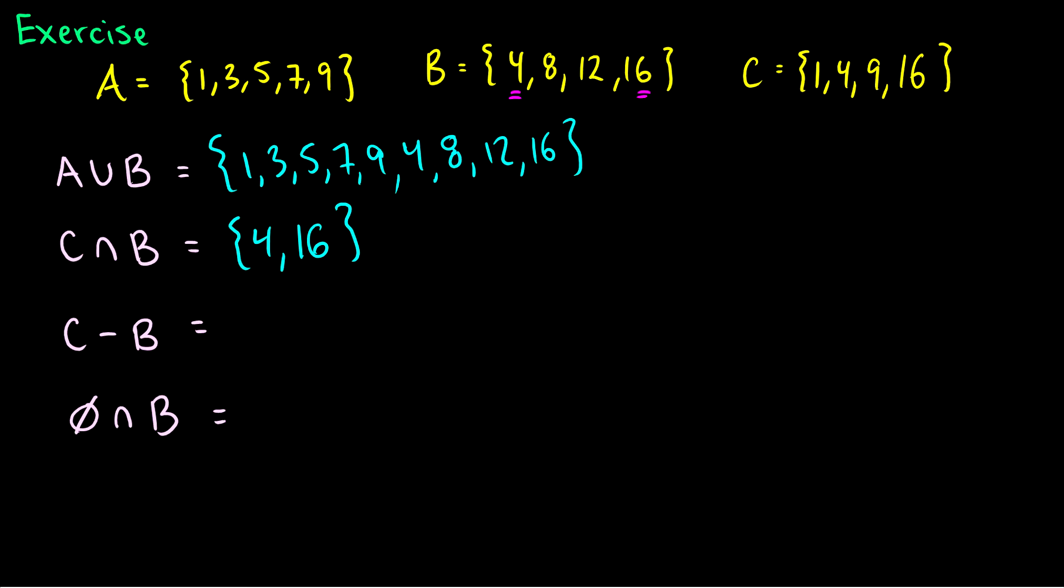C minus B is everything in C minus everything in B. So let me demonstrate this specifically with what I mean with subtraction in mind. Let's write out everything in C, 1, 4, 9, and 16.